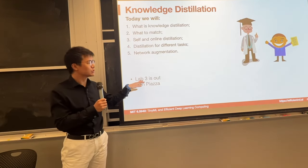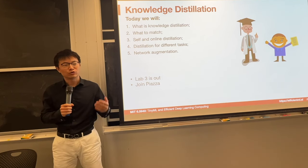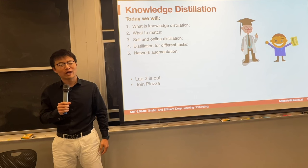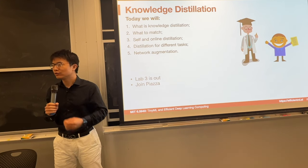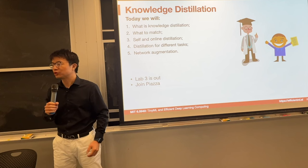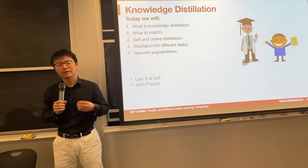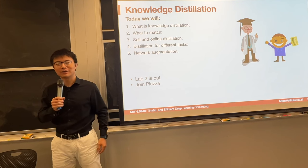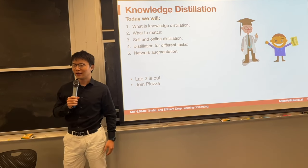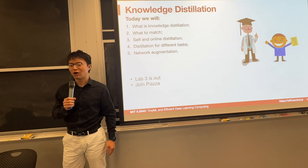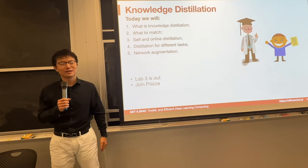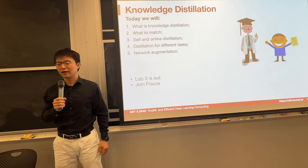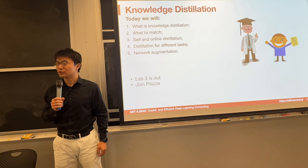Lab 3 is out, which is about neural architecture search. We carefully designed the Google CoLab and provided you with the once-for-all network, which is already pre-trained so that you can search an efficient architecture by sampling different sub-networks from this once-for-all network — a very affordable search cost. You are going to implement the evolutionary search with different constraints to find the model with the best quality, which is pretty fun.